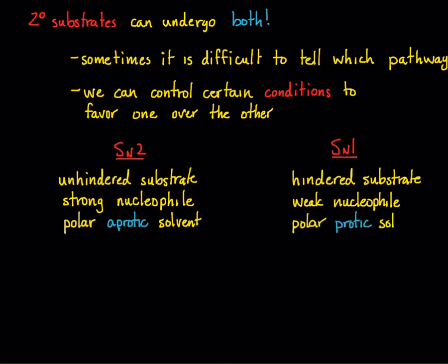Conversely, for an SN1, you still want a polar solvent — so both conditions require polar solvents — but now a protic solvent. Generally speaking, the more polar solvents are protic: water, alcohols — these are protic solvents. Why do you want a polar protic solvent? Because polar protic solvents help to stabilize charge. In an SN1 mechanism, you're developing charge — you're developing a carbocation. Therefore, if we can stabilize that carbocation, we decrease the activation energy. These are the factors you're going to be looking at in trying to determine whether a mechanism is SN1 or SN2.